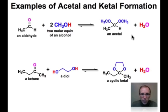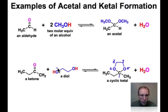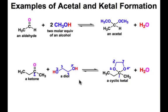In the second case, rather than having two equivalents of an alcohol, we have a single molecule that carries two hydroxyl substituents — this is known as a diol. The product obtained is a five-membered ring. Four of the atoms of that five-membered ring come from the diol — atoms two, three, four, and five — and atom number one is the atom that was the carbonyl carbon.